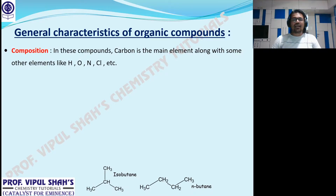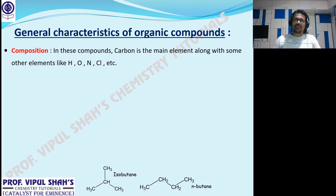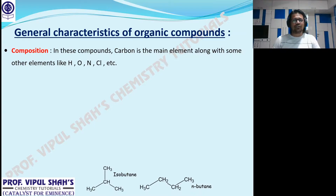Organic chemistry is the chemistry of carbon compounds — compounds which contain carbon, and along with carbon, there are other elements that carbon will share electrons with. You might have heard the word covalent bonding — sharing of electrons. So carbon shares electrons with hydrogen, oxygen, nitrogen, sulfur, phosphorus, halogens, and so on. That's the composition: carbon is present throughout along with other elements.